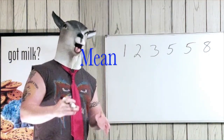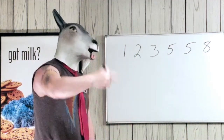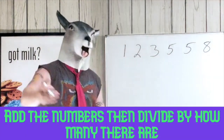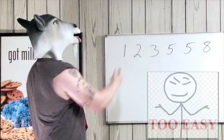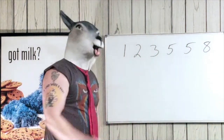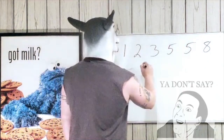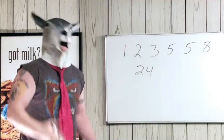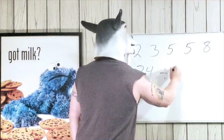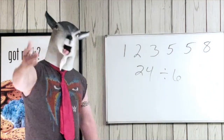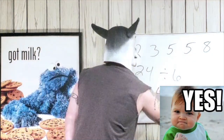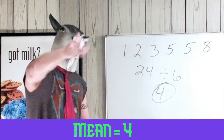First things first, let's take care of the mean. Remember, if you get a bad average, your mama's gonna be mean. So let's find the average — add them all up, then divide by how many there are. 1 plus 2 is 3, plus 3 is 6, plus 5 is 11, plus 5 is 16, plus 8 is 24. So we have 24. Now how many are there? We count: 1, 2, 3, 4, 5, 6. So 24 divided by 6 — trust the goat — 24 divided by 6 is 4. So our mean is 4.